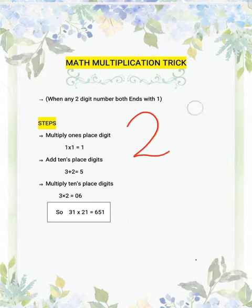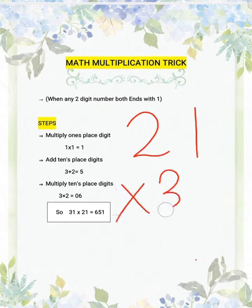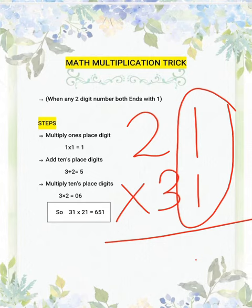The case is suppose you have anything like 21 into 31. If you observe, both ones digit numbers are ending with 1. In this case, this trick is very helpful.